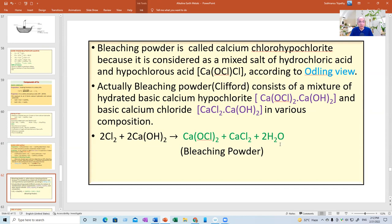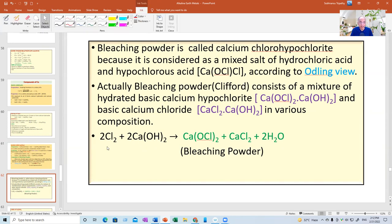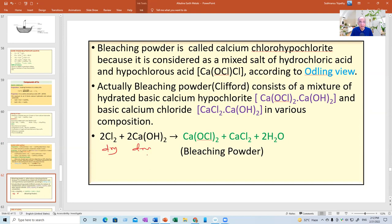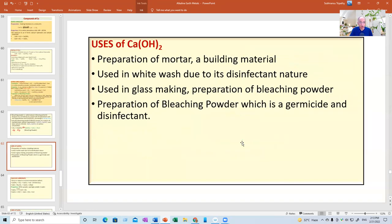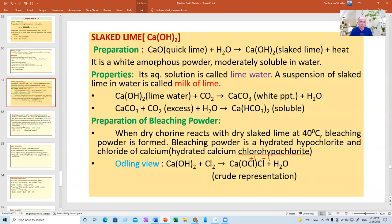In the Odling view, it is this one. This is the oldest formula that Odling proposed. But Clifford, later on, he analyzed the mixture. It contains various combination of mixture of hydrated basic calcium hypochlorite and basic calcium chloride with water of crystallization. But for you, so far as your book is concerned, you write like this. Chlorine, two chlorine plus two calcium hydroxide, that is dry. All should be dry. It's not lime water. It should be dry. To give you a mixture of calcium hypochlorite, calcium chloride and water. This is what is given in your book. You can write it instead of writing the Clifford formula. What is the composition of bleaching powder? It's a combination of calcium hypochlorite and chloride.